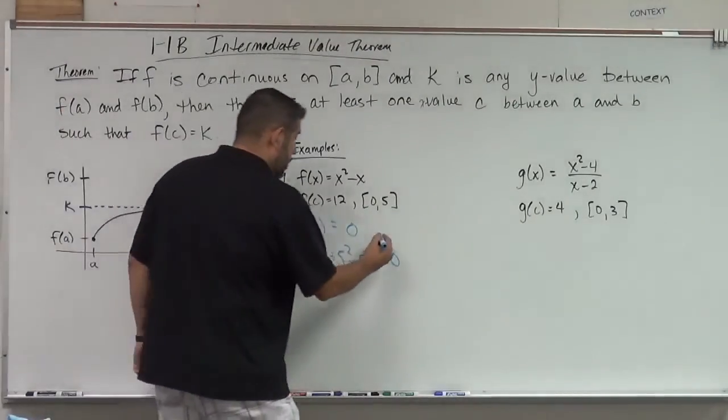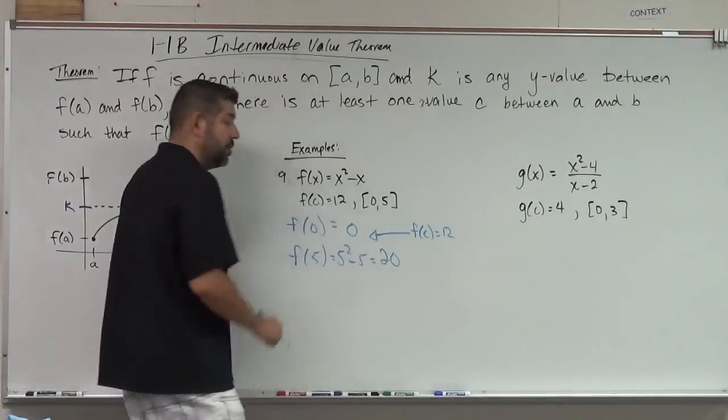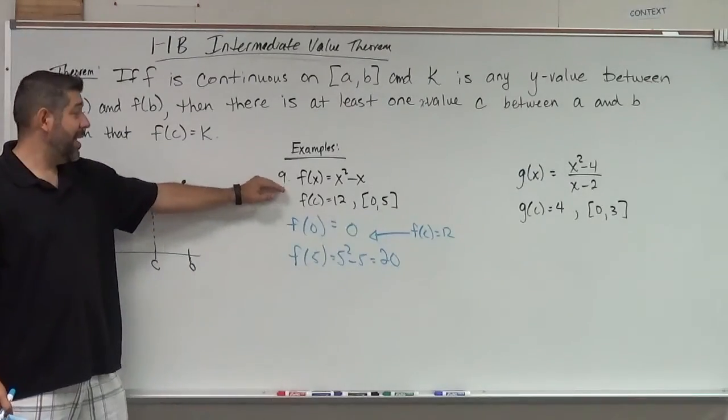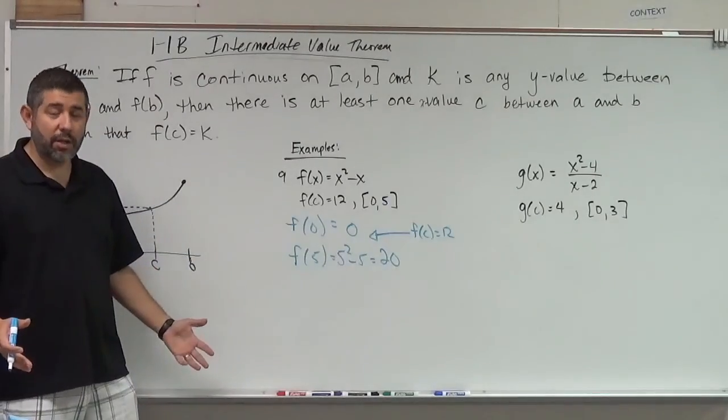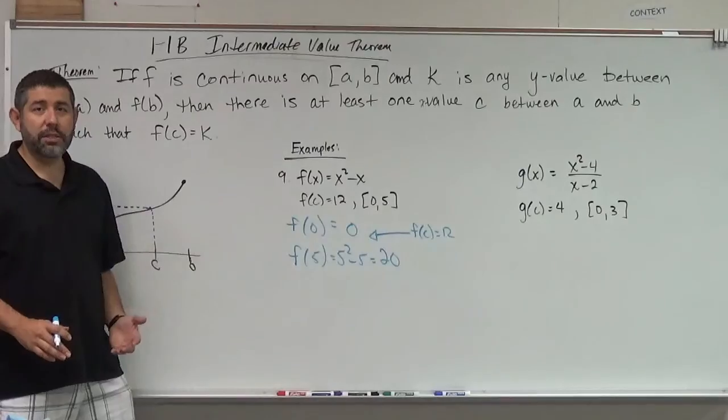Now, is f(c) equal 12 in between 0 and 20? Yes, it is. So we're going to put a little arrow there, and we're going to say f(c) equals 12 is in between 0 and 20. So, since it's continuous, and since 12 is between 0 and 20, the intermediate value theorem does hold for this function.